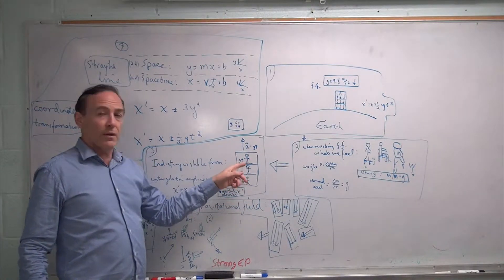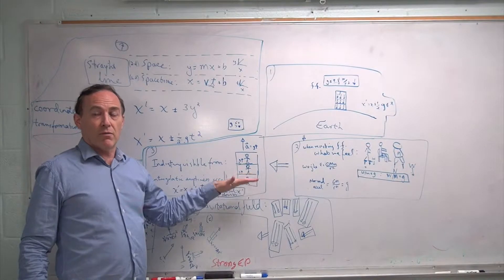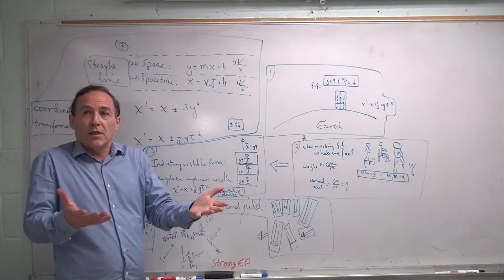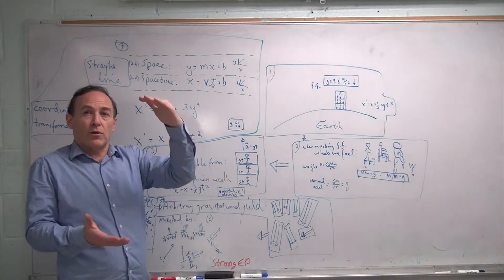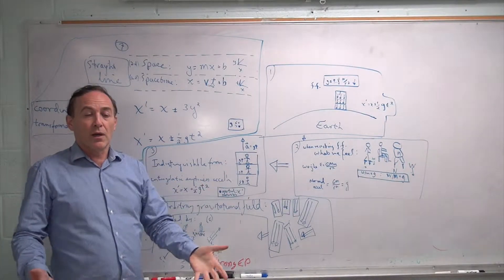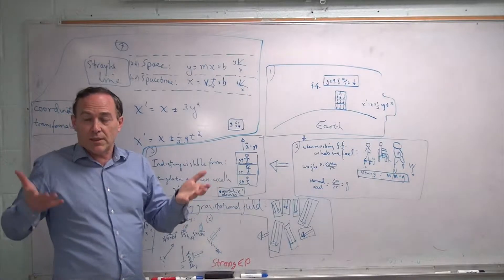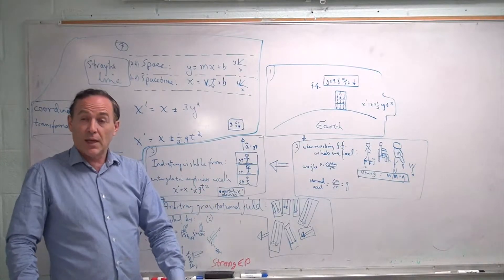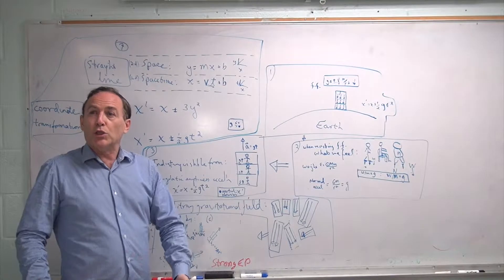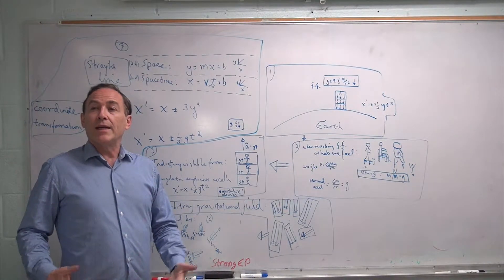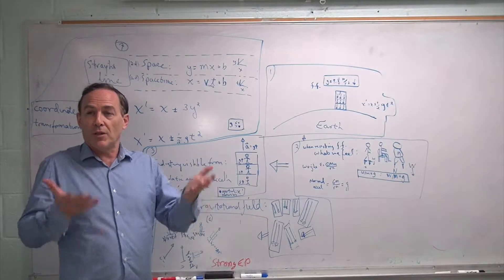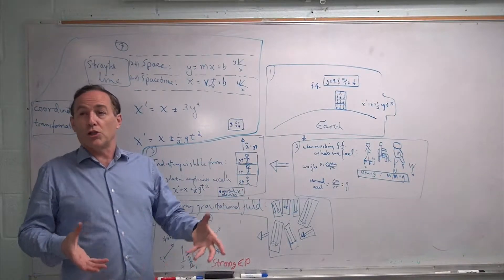Everybody in that building is feeling that acceleration. Since it's just an acceleration, it doesn't matter if you're on the third story or the second story or the first story, or what side of the building you're on — you're all feeling exactly the same acceleration, and therefore you're going to feel exactly the same accelerated push on your feet, irrespective of your mass. Obviously, it doesn't depend on your mass; it depends on the acceleration that this rocket ship building has.